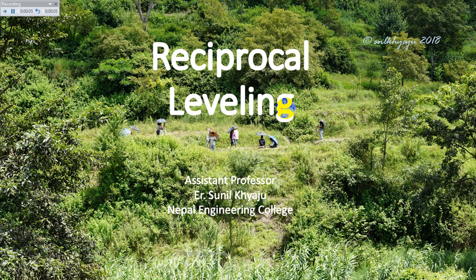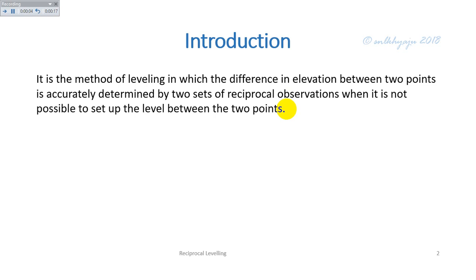Welcome back to the video lecture. In this lecture, I will go through reciprocal leveling. Reciprocal leveling is the method of leveling in which the difference in elevation between two points is accurately determined by two sets of reciprocal observations when it is not possible to set up the level between the two points.